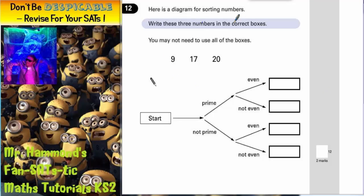Question 12. Here is a diagram for sorting numbers. Write these numbers in the correct boxes. You may not need to use all of the boxes. So we've got three numbers and four boxes. So that's why they say we don't need to use all of them.